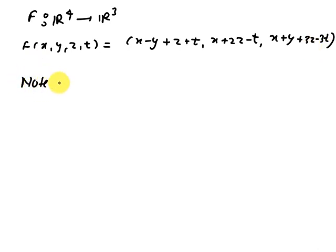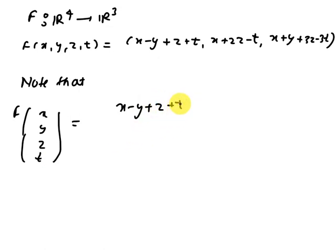So note that it can be written as F equals X minus Y plus Z plus T, and X plus 2Z minus T, X plus Y plus 3Z minus T.